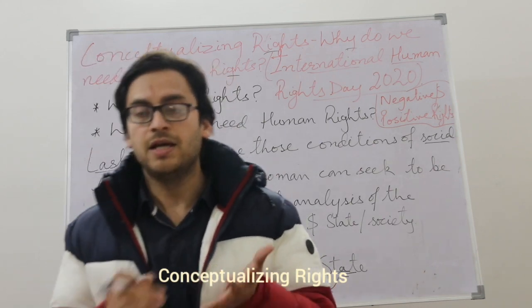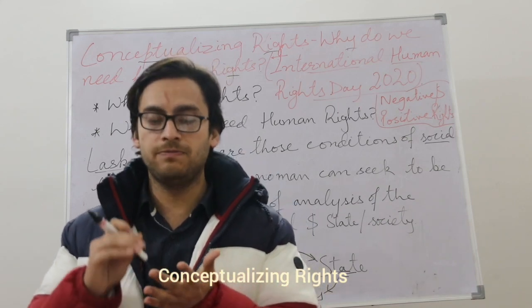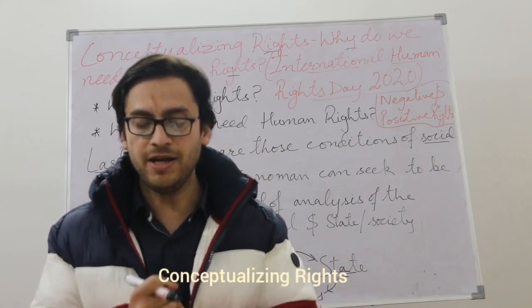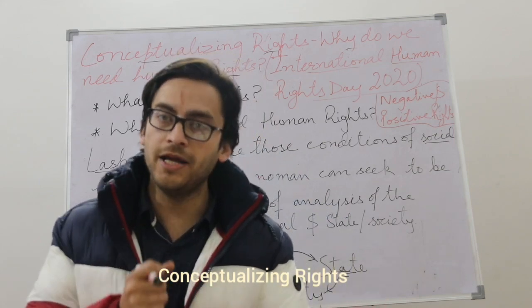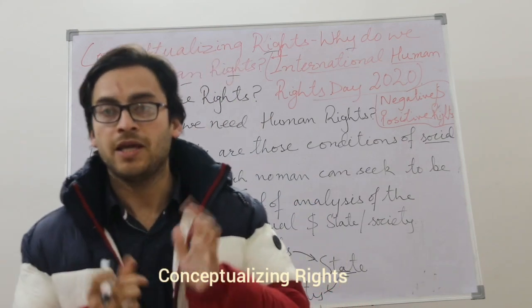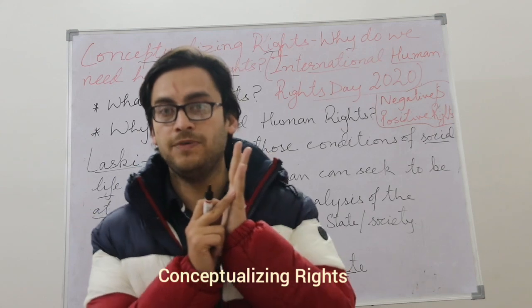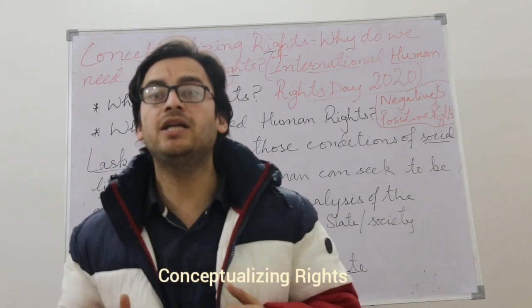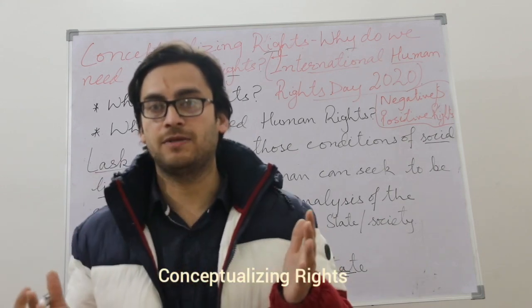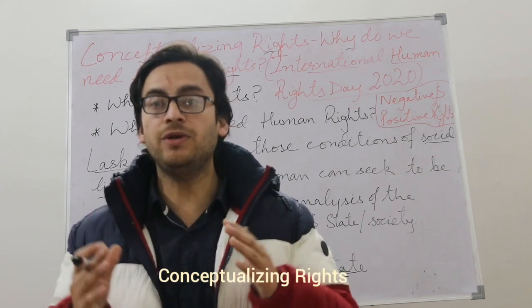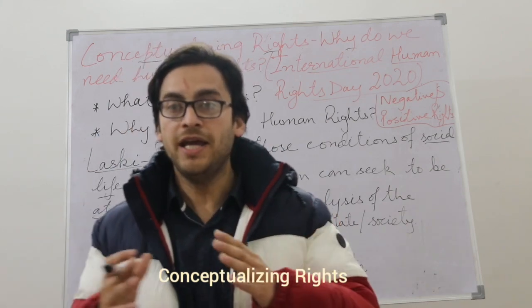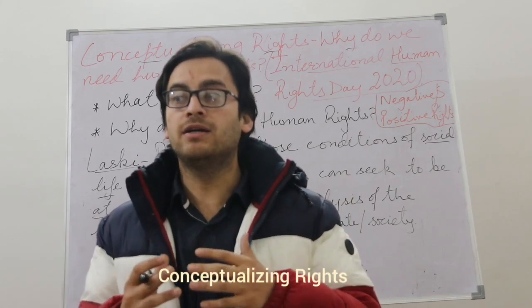The state is a means and the individual is an end when we are talking about rights. Rights also check the state's arbitrary nature. Any state has police, military, and army, and it is very much possible that the state becomes a police state. To keep a check and balance on such a state, there is a need for rights. Rights bring a safeguard to individuals.